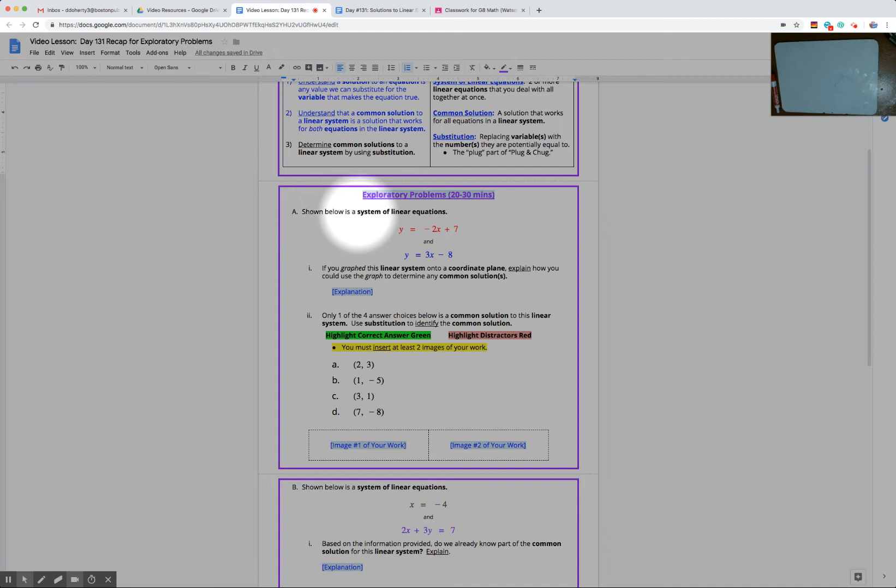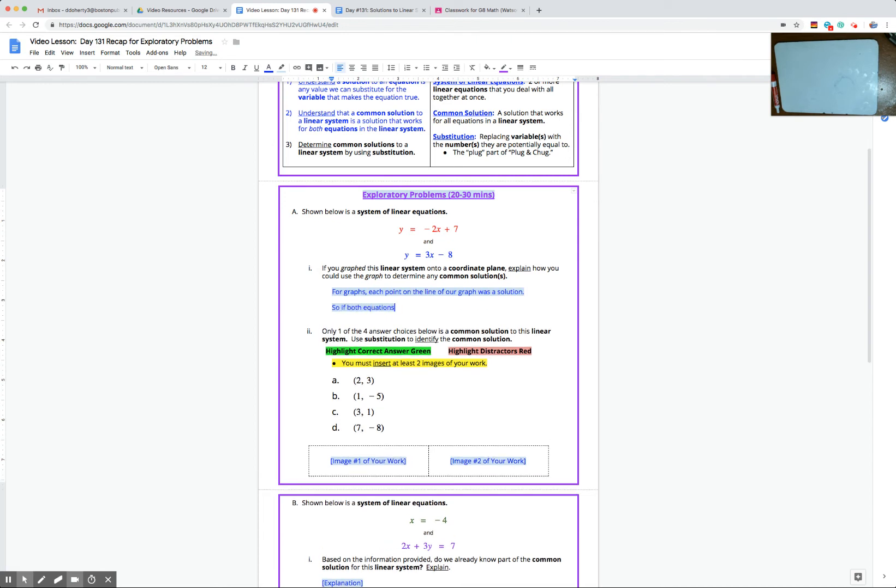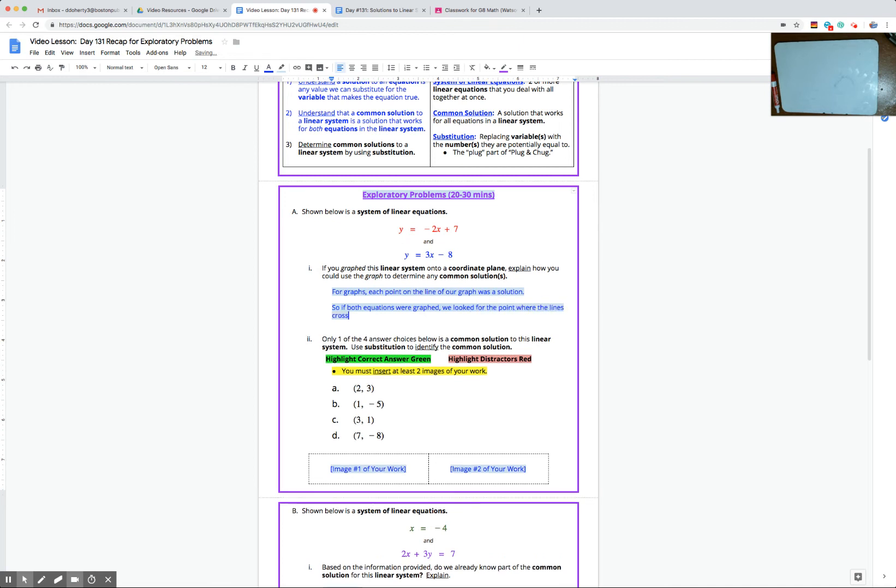Part A says shown below is a system of linear equations, meaning two or more linear equations that we work together at once. Part 1 said if you graphed this linear system onto a coordinate plane, a fancy word for a graph, explain how you could use the graph to determine any common solutions. So this should be familiar. This is what we worked on the last couple days. We understood that for graphs, each point on the line of our graph was a solution. So if both equations were graphed out, look for the point where the lines crossed, intersected, and is really the key term we want to be using there.